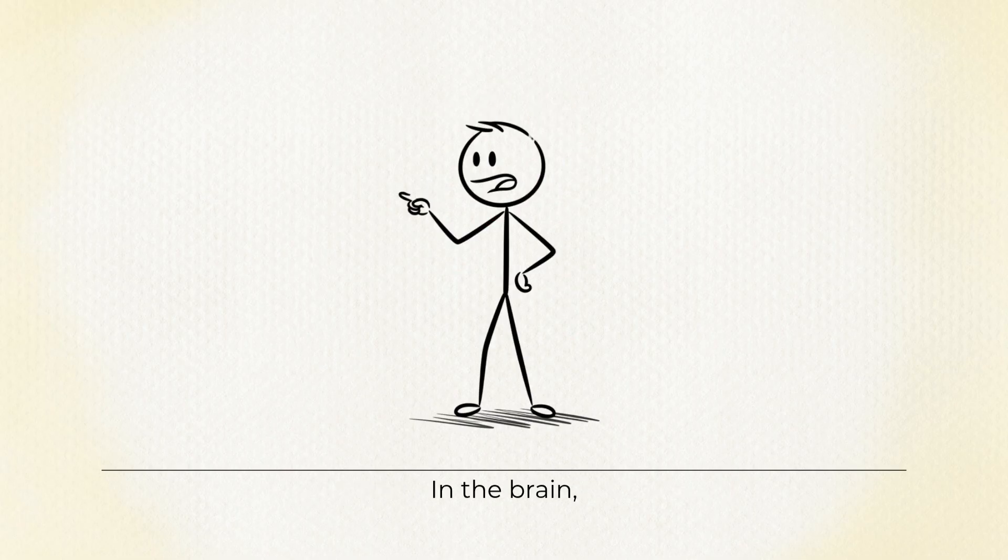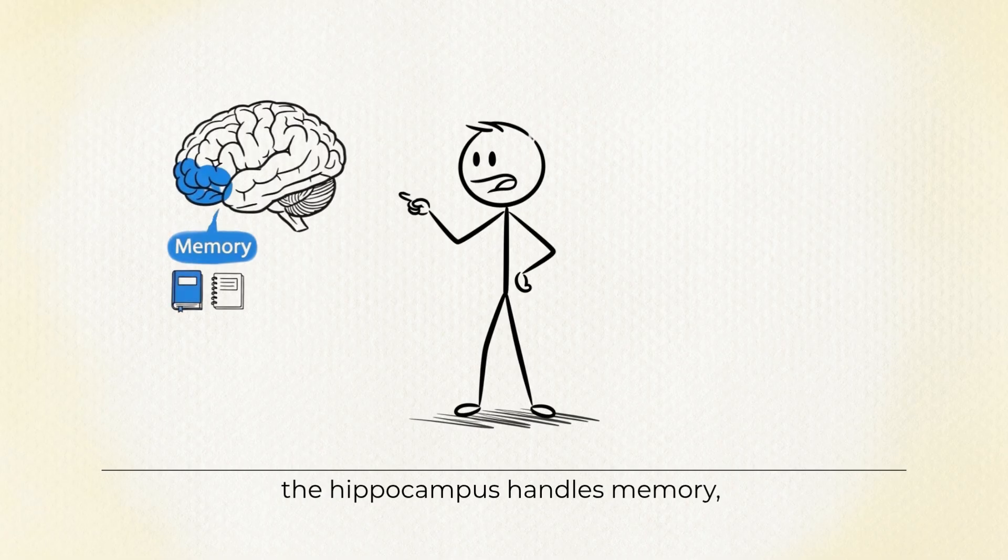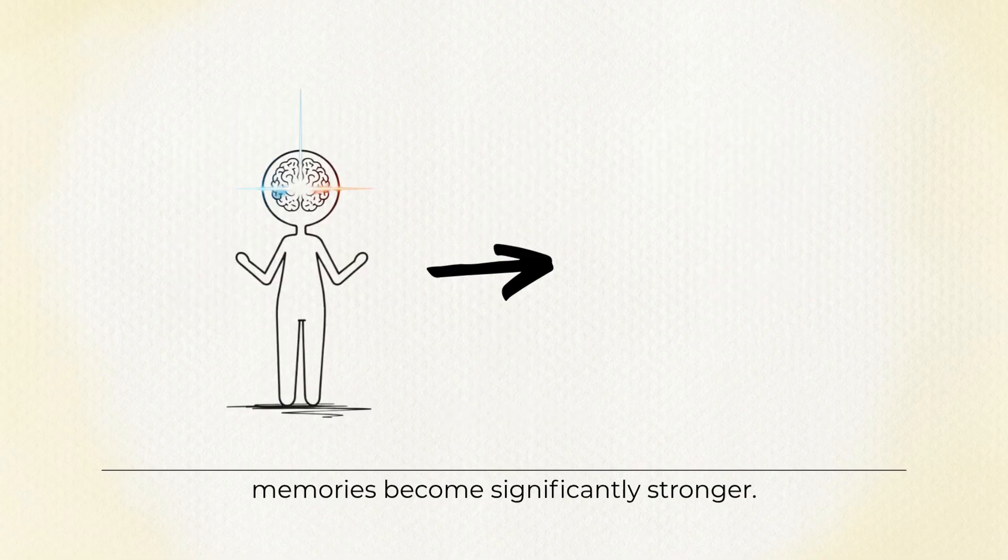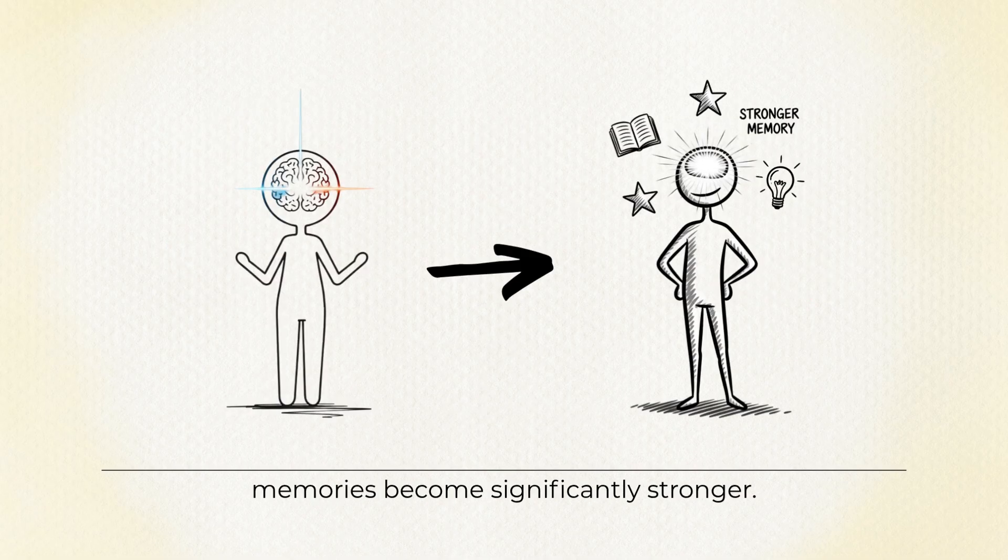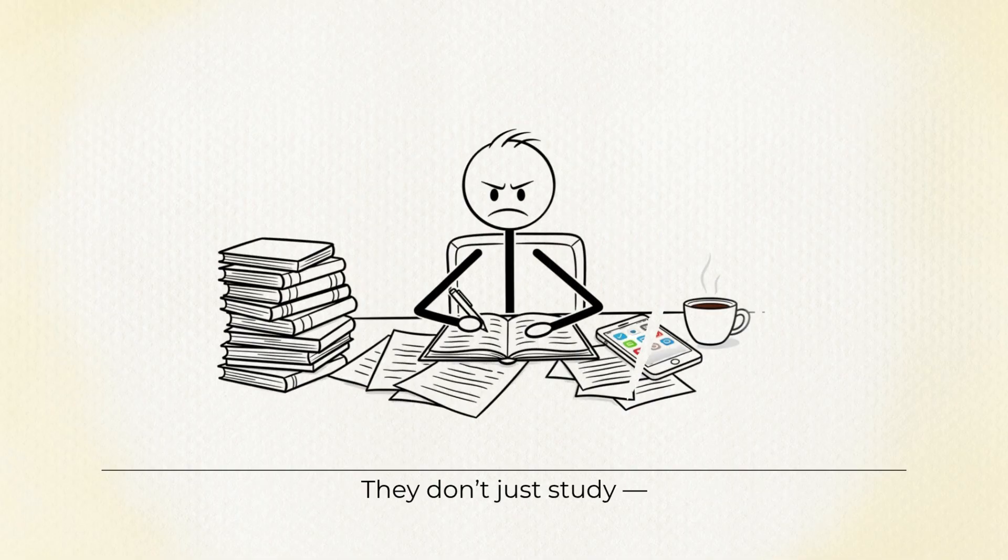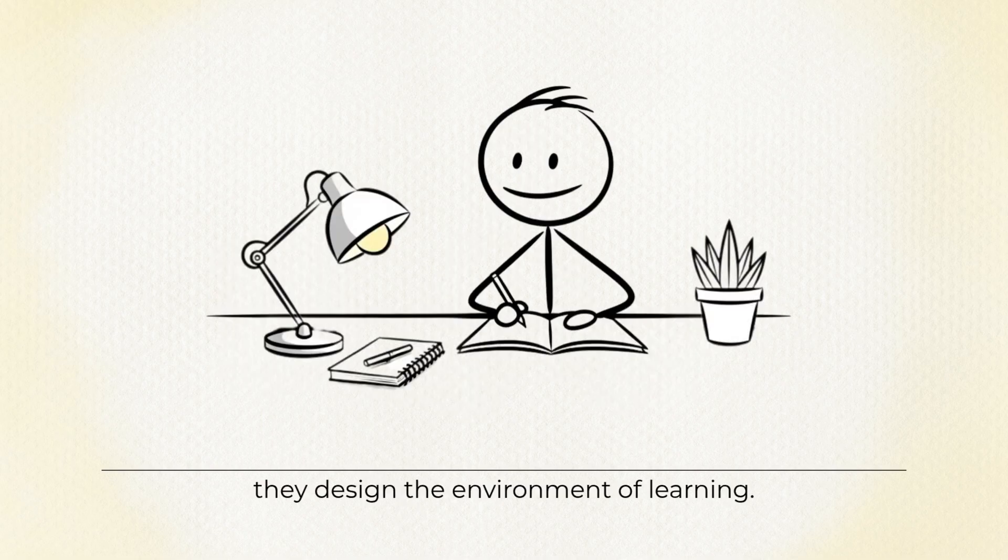In the brain, the hippocampus handles memory and the amygdala handles emotion. When they activate together, memories become significantly stronger. That's why top students engineer emotional states. They don't just study, they design the environment of learning.